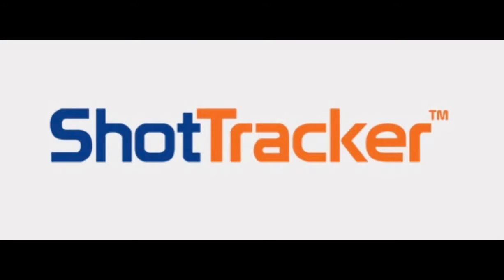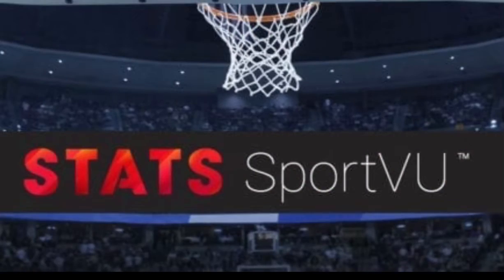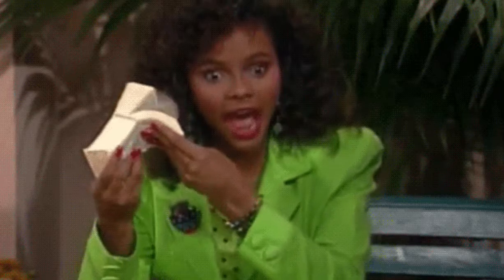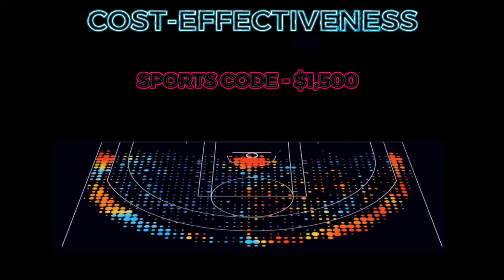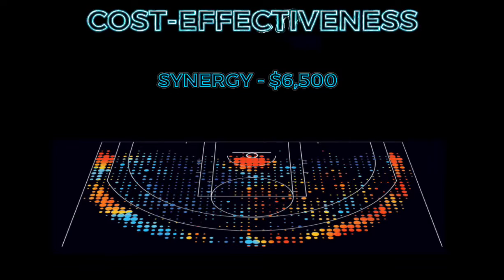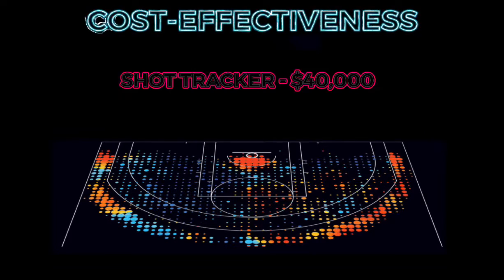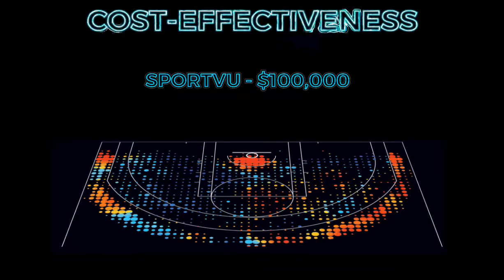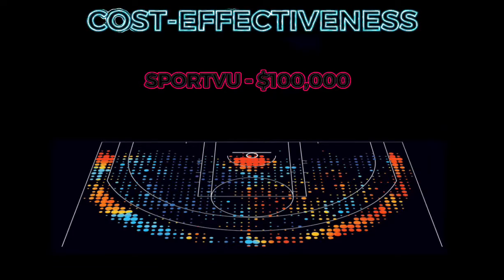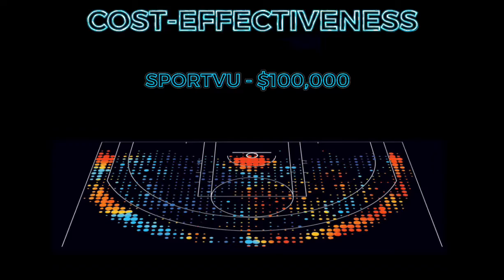While there are more advanced statistical technologies available to college programs, like ShotTracker and SportVU, UMBC uses Synergy and SportsCode because of how cost-efficient they are. For an annual subscription, it costs $1,500 for SportsCode and $6,500 for Synergy. This pales in comparison to ShotTracker, which costs around $40,000, and SportVU, which will run programs up to $100,000. Because of budgetary reasons, six-figure expenses for stat technologies is something that our program cannot afford.